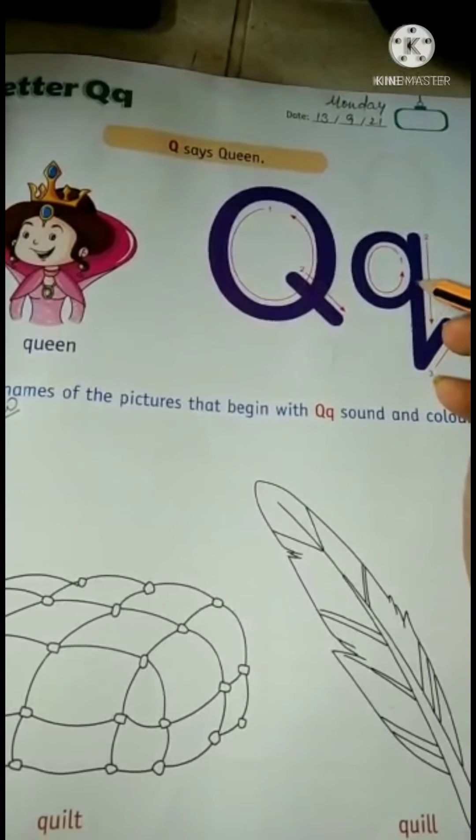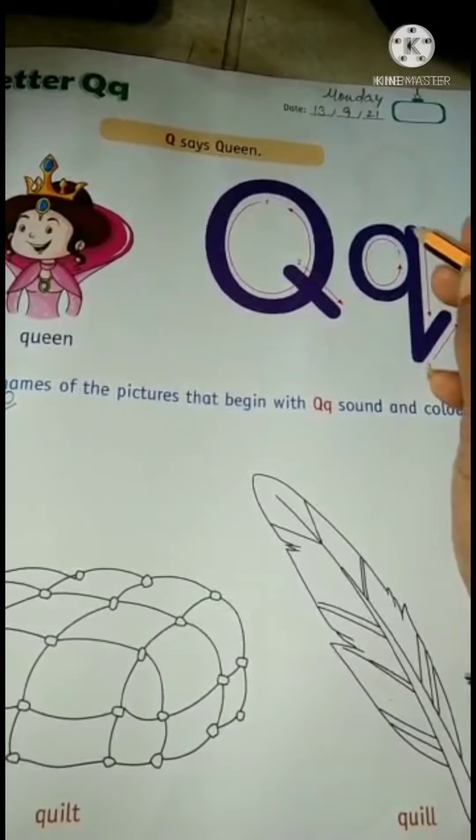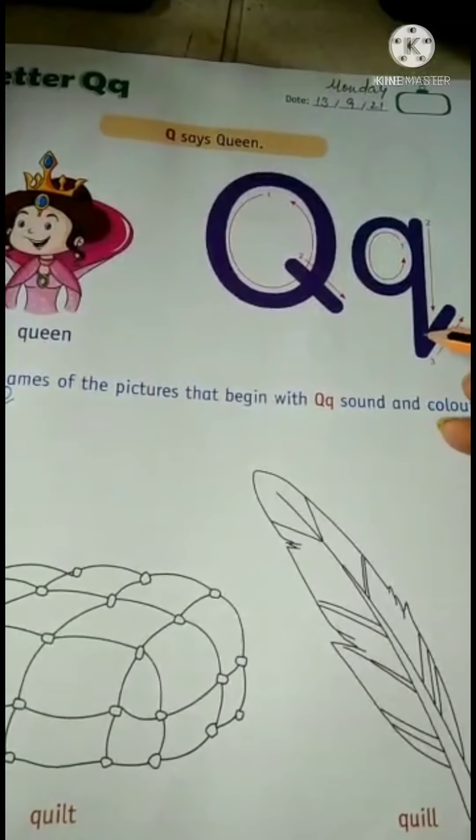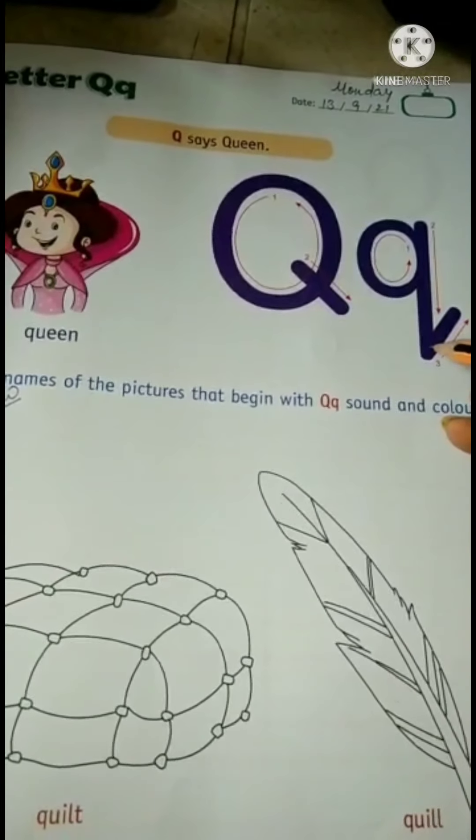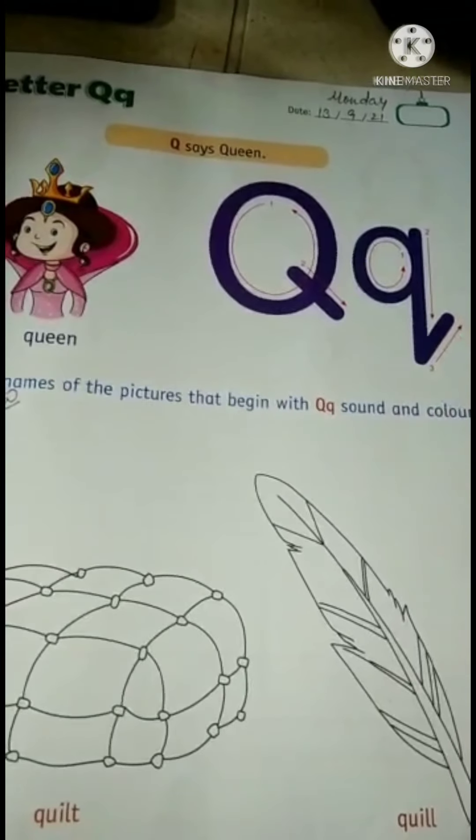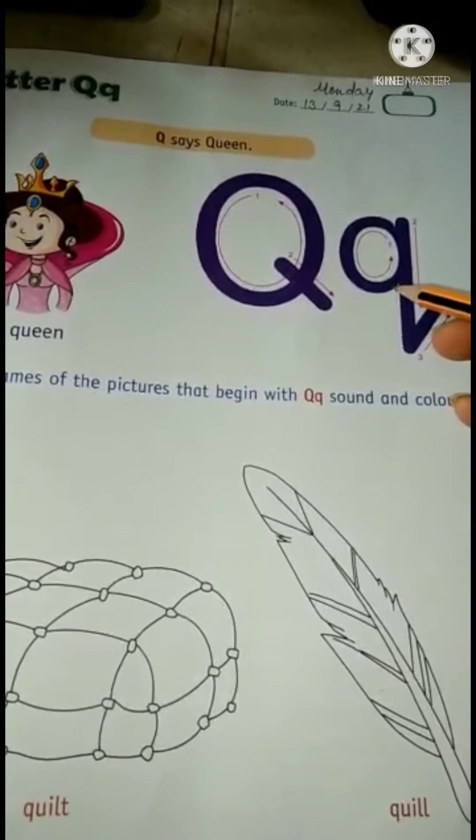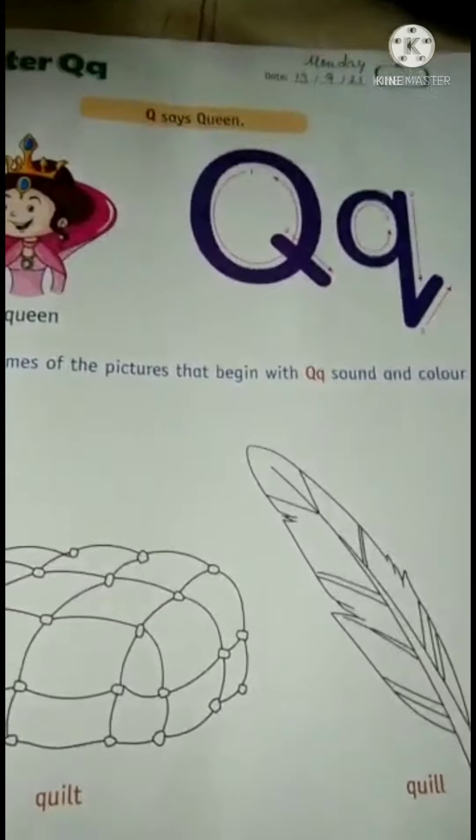Now see, we will write small letter q within two blue lines. We will draw one standing line and end with the small curve to the upside. It is small letter q. Right?